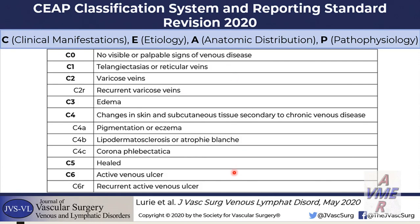The 2020 revised CEAP is the same as the previous classification but adds C2R for recurrent varicose veins, C6R for recurrent active venous ulcers, and more detail about C4: C4a for pigmentation or eczema, C4b for lipodermatosclerosis or atrophy blanche, and C4c for corona phlebectatica.